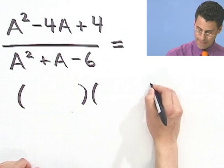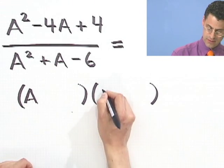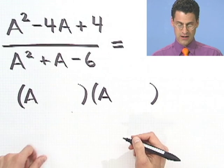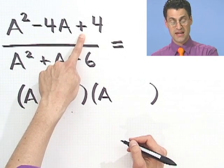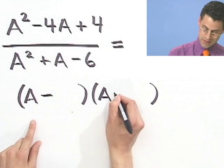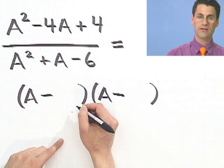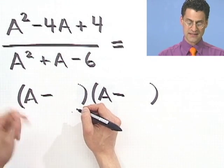Let's see what we can do on the top. So I put an A here, A here. I see that both signs will be the same, and they will both be minus. And I need something that multiplies to give 2 and adds to give 2.